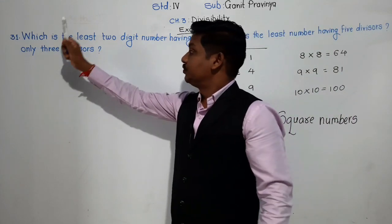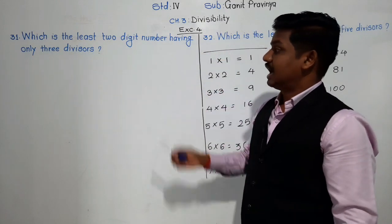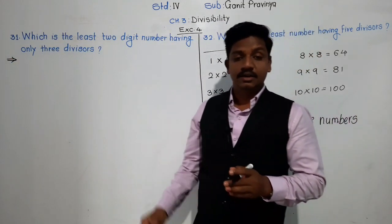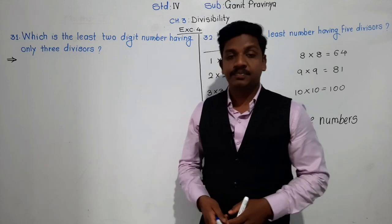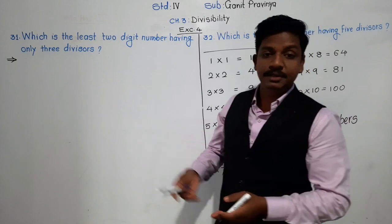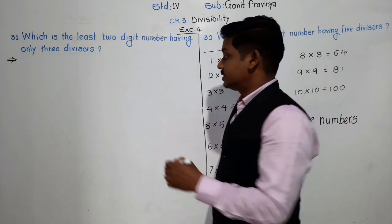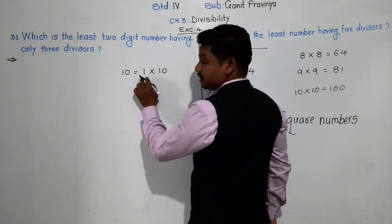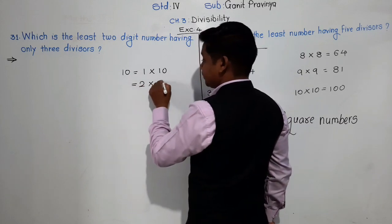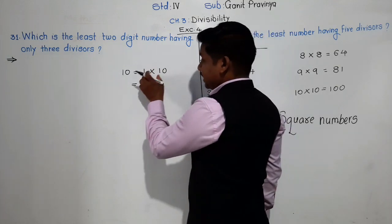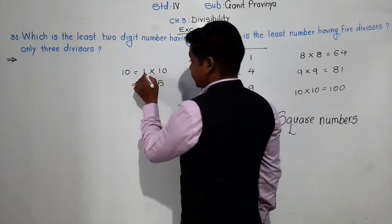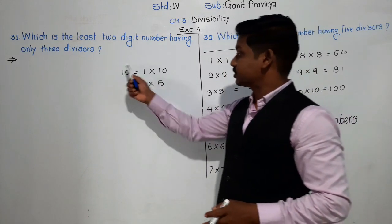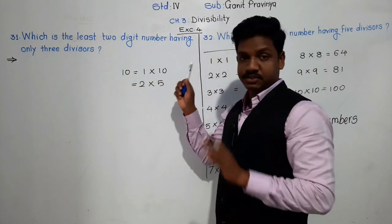Now come to the problem: which is the least two-digit number having only three divisors? You may know that divisors are in pairs. For example, the divisors of 10: the first pair is 1×10, and another is 2×5. So the divisors of 10 are 1, 2, 5, and 10 — that means there are 4 divisors. All the time when you find divisors, they will be in the form of pairs.